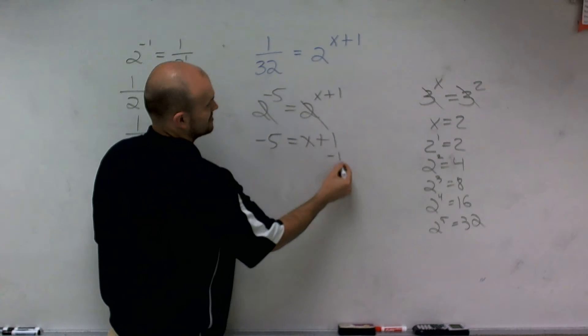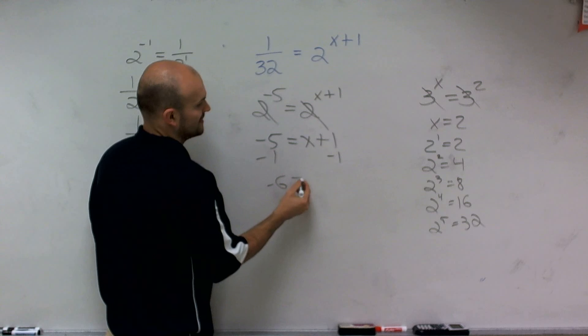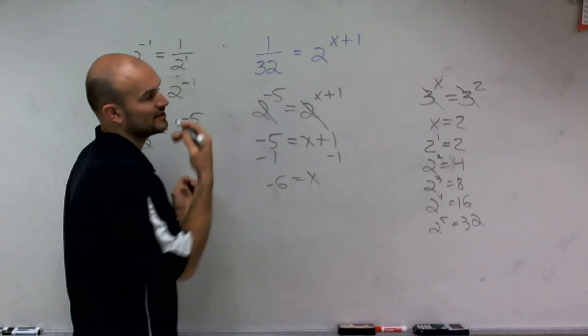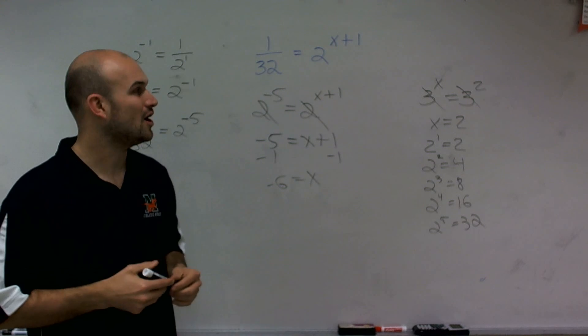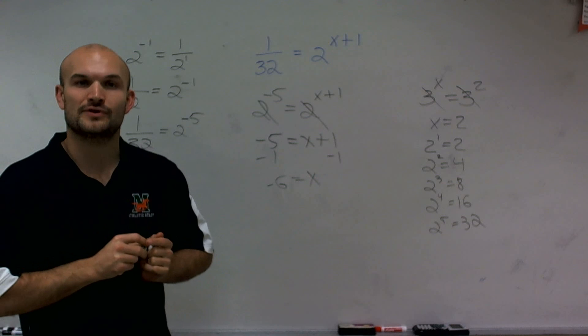So to solve for x, I subtract 1 on both sides, and I get negative 6 equals x. So there you go, ladies and gentlemen. That's just how you solve when you have a rational base for your exponent. Thanks.